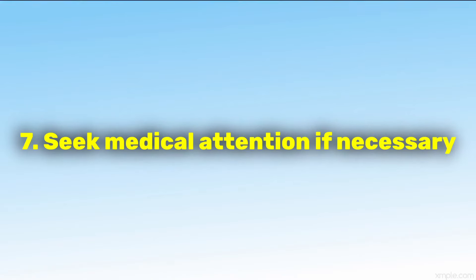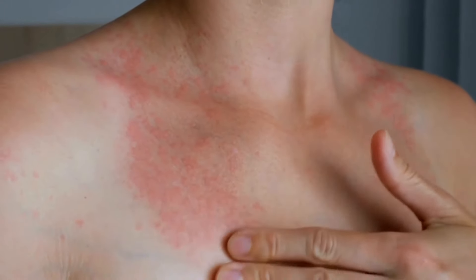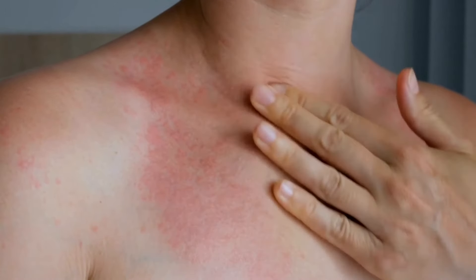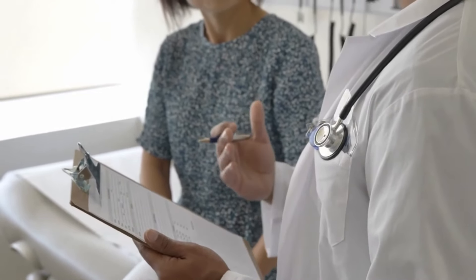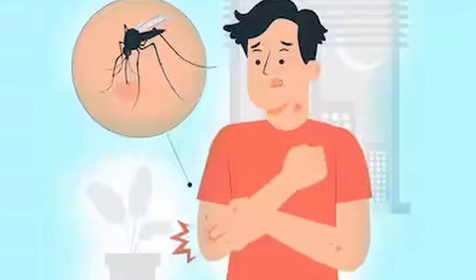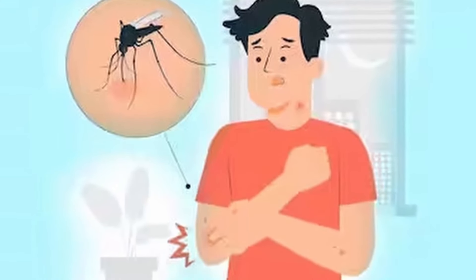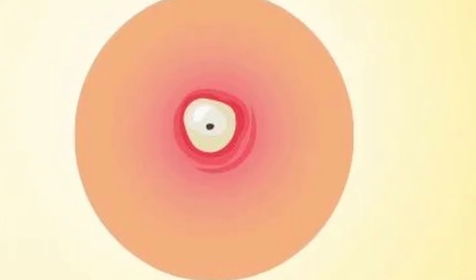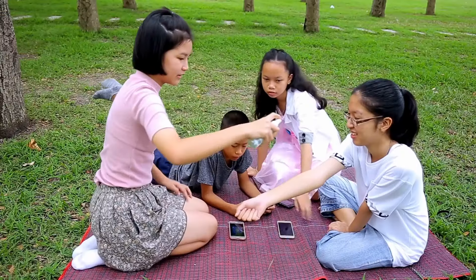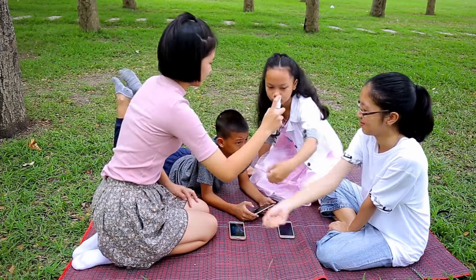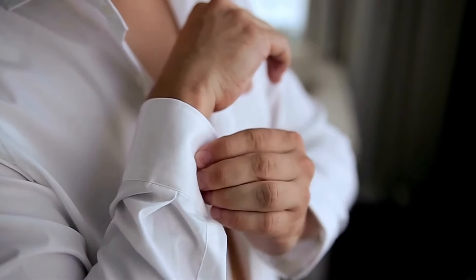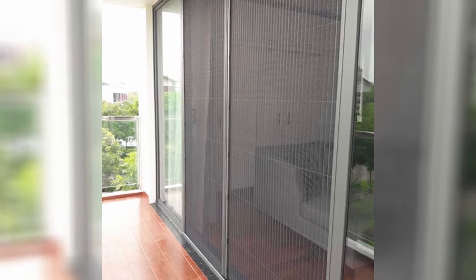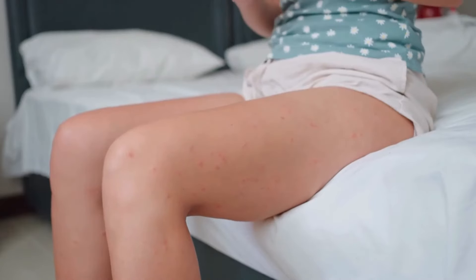Seek medical attention if necessary. In rare cases, mosquito bites can lead to allergic reactions or secondary infections. Seek medical attention if you experience severe swelling, difficulty breathing, dizziness, nausea, or signs of infection such as increased redness, warmth, or pus at the bite site. Take preventive measures to avoid further mosquito bites, such as using insect repellent, wearing protective clothing, and using mosquito nets or screens when sleeping or staying indoors.